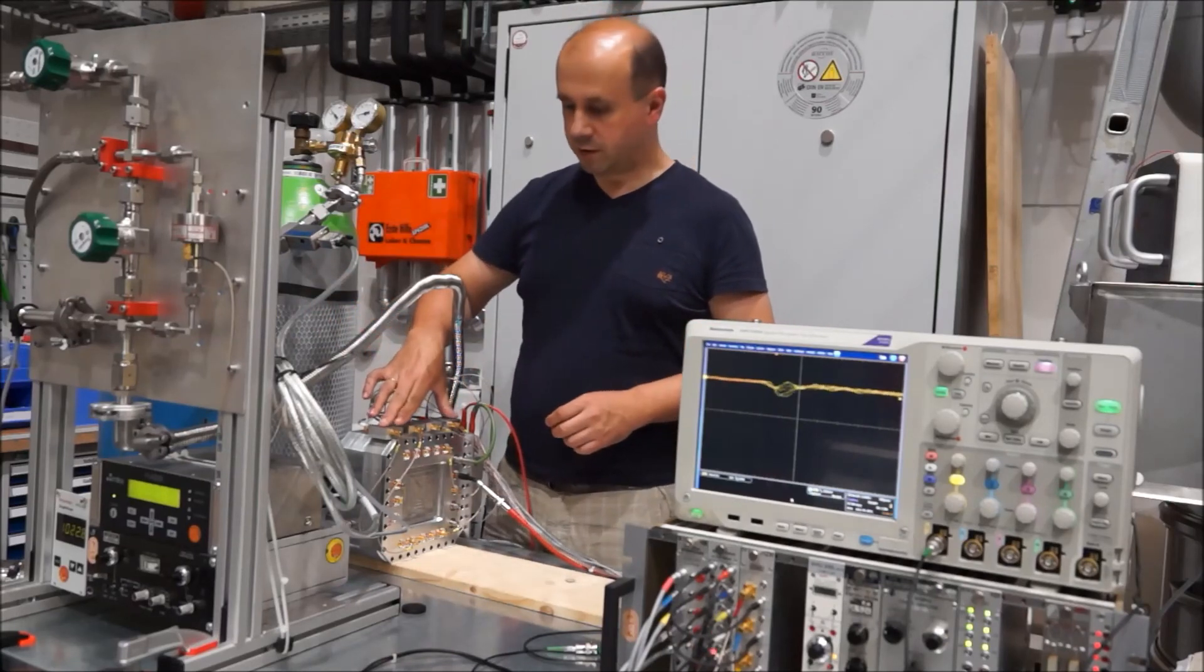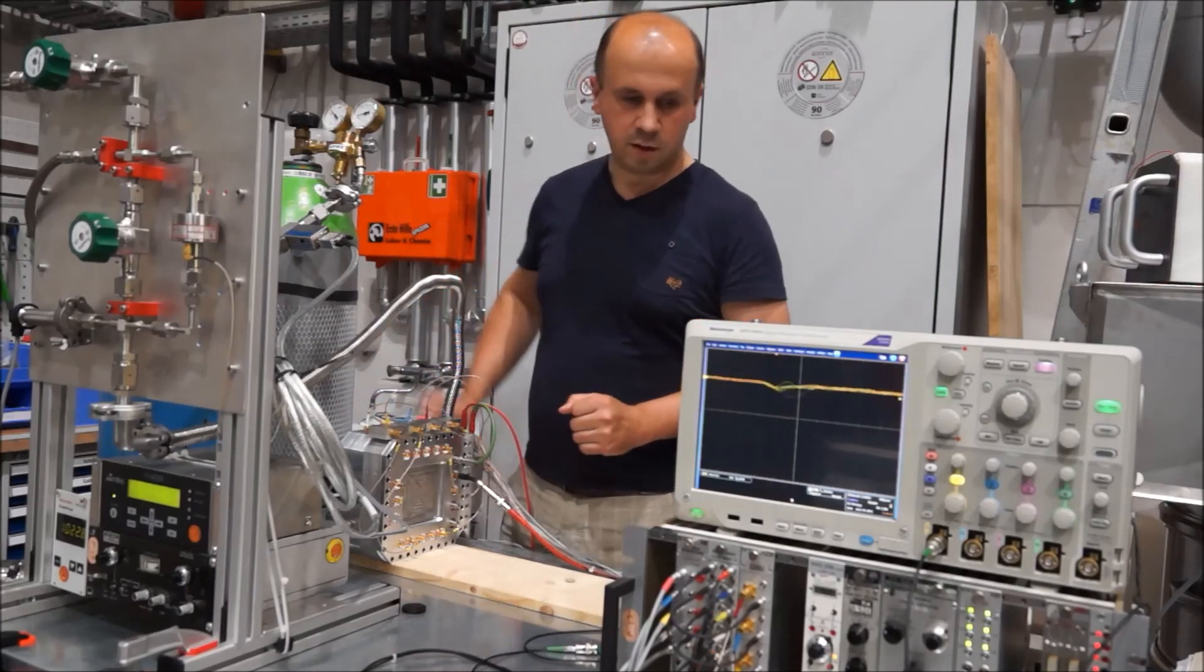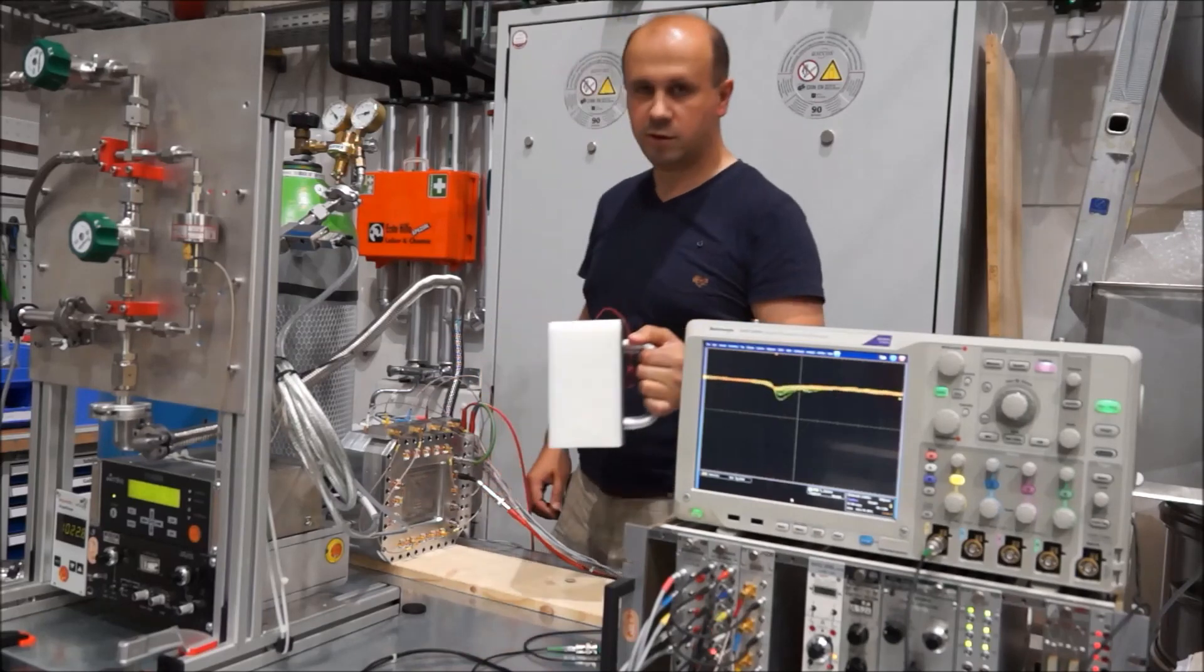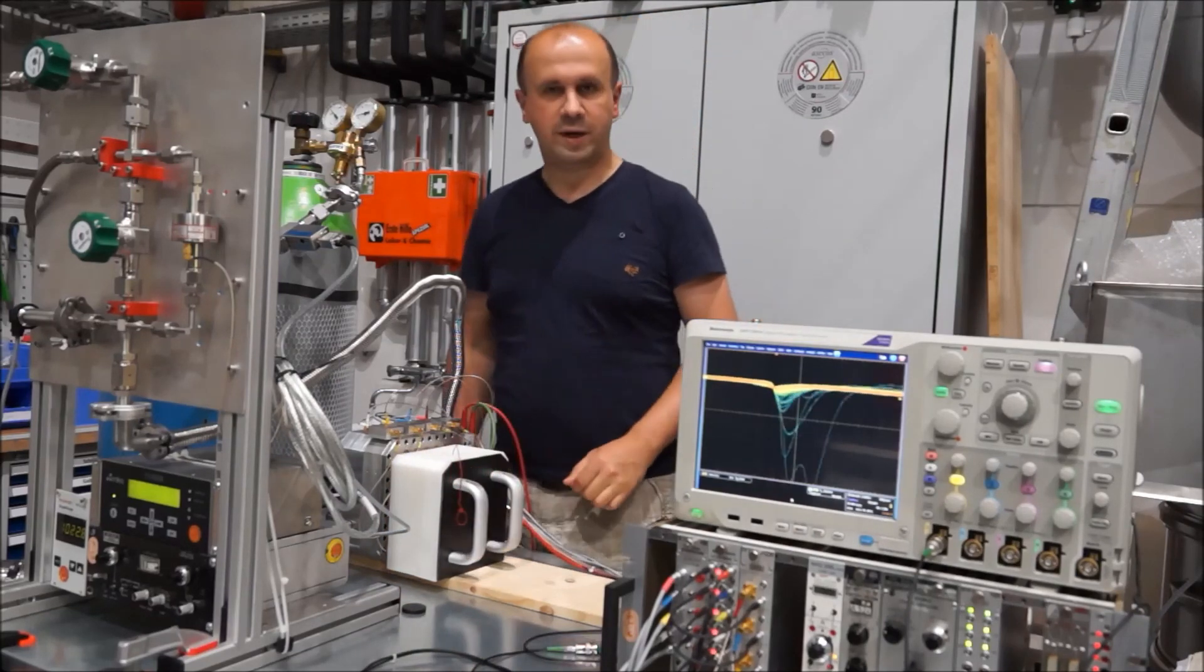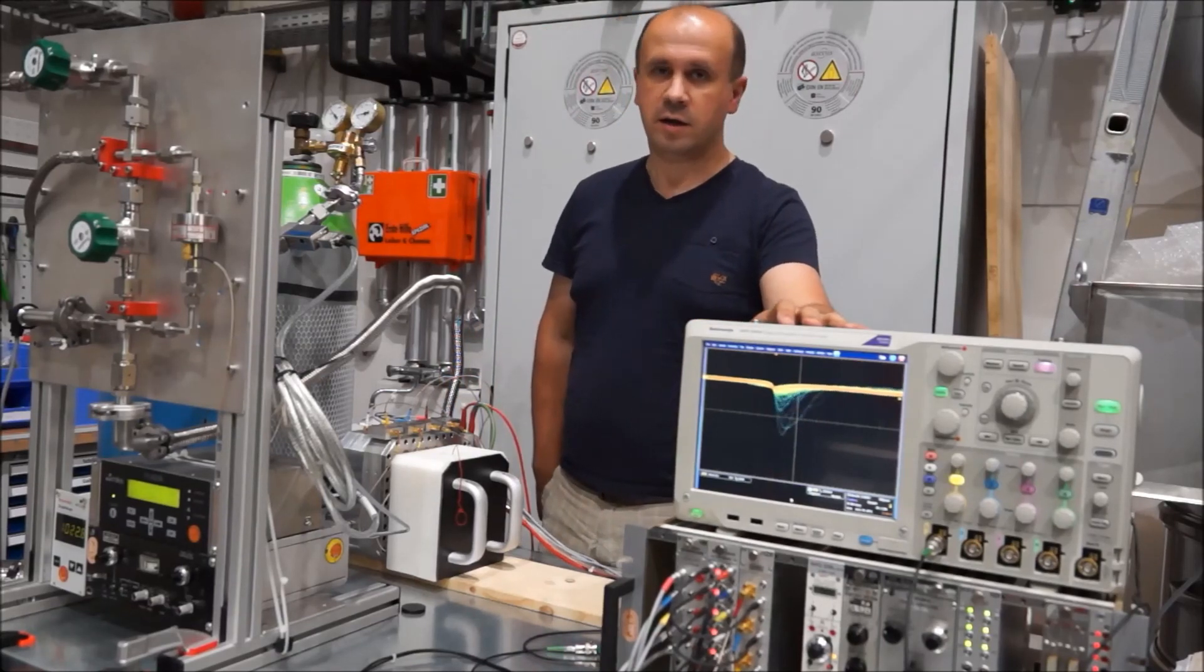Then we connect our readout electronics, apply some voltage on it, and with the help of the compact neutron source, we can see the first signals coming from the anode.